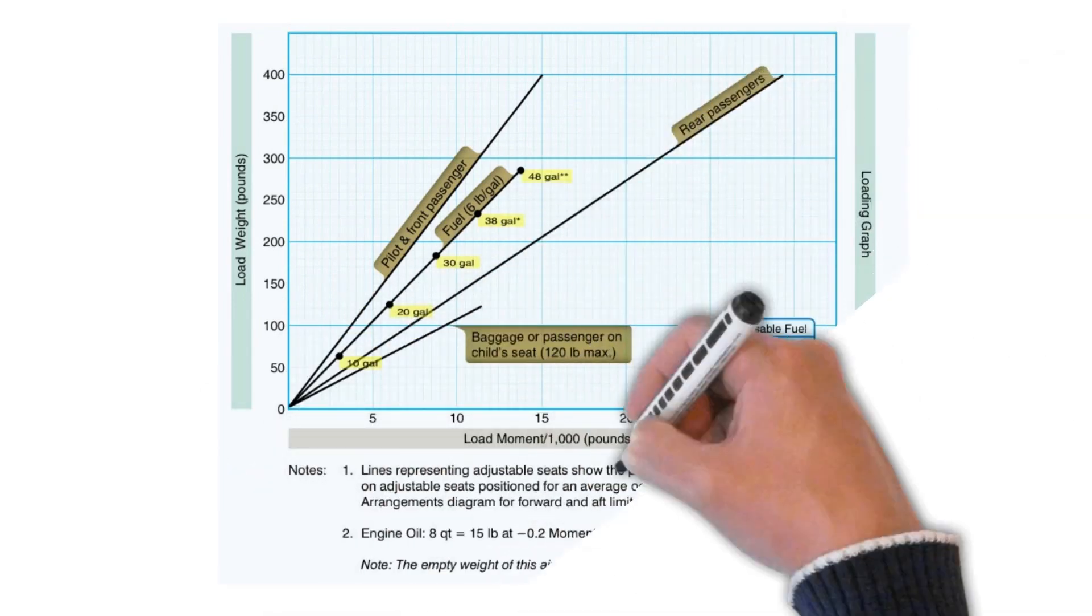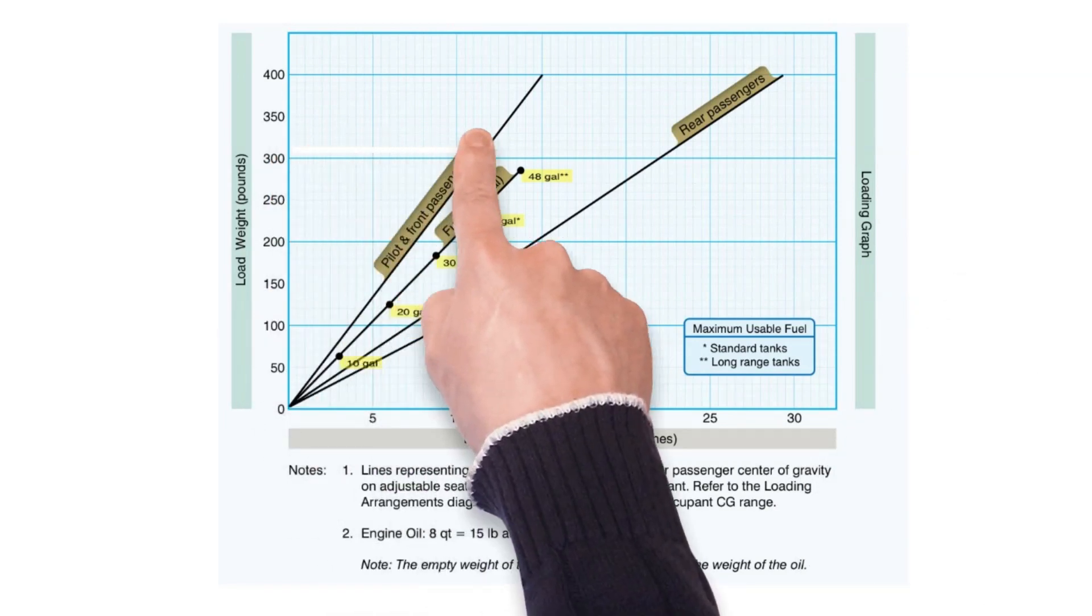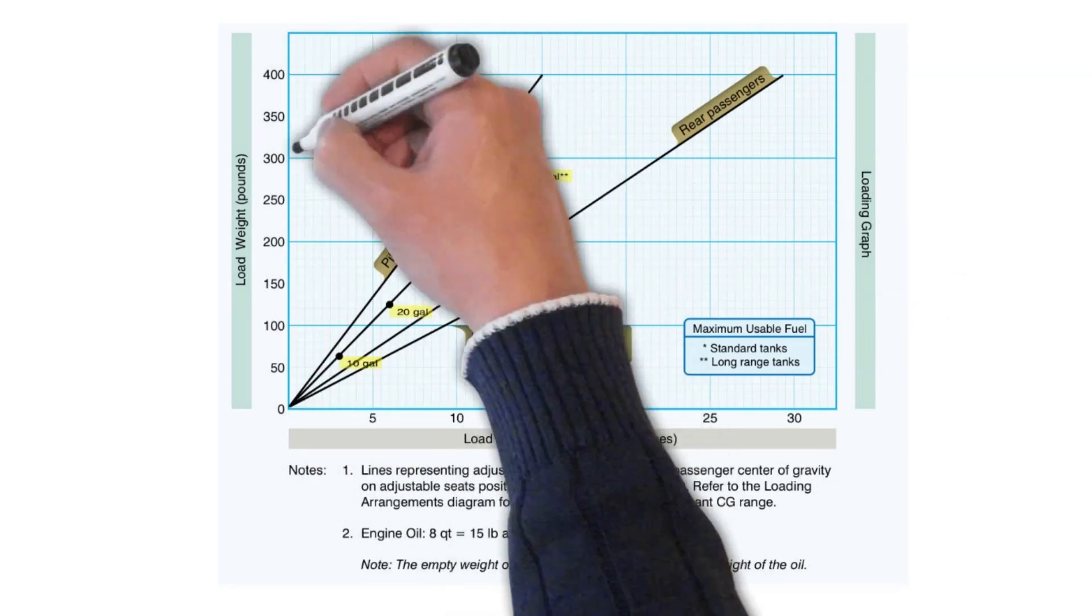To solve this problem, we would use a straight edge and draw lines from the corresponding weights on the left of the chart. We would draw the line over to intersect the line that corresponds to the weight we are trying to solve for.